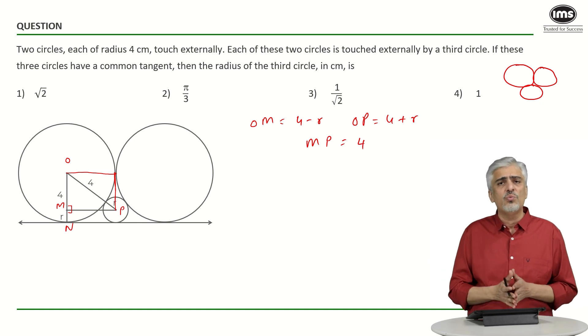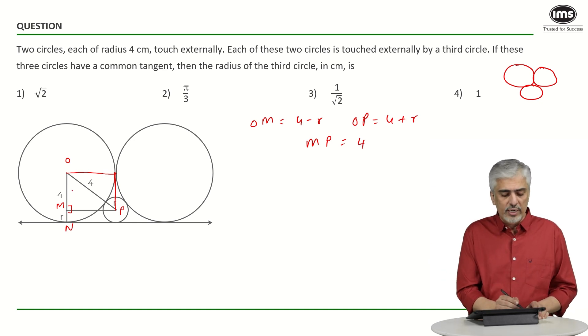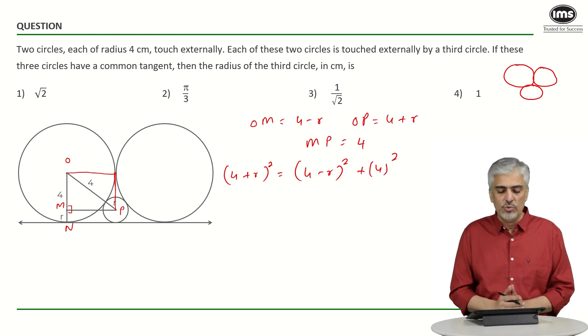I think after this, the sum is very straightforward. Let us go through that again. OM is 4 minus R because it is ON minus MN. Then we know OP is 4 plus R and MP is 4. Use Pythagoras theorem. OP is your hypotenuse. So we will get (4 + R)² = (4 - R)² + 4².